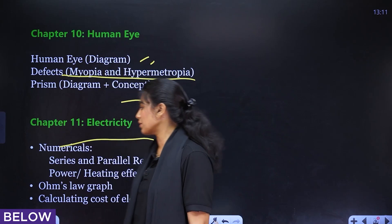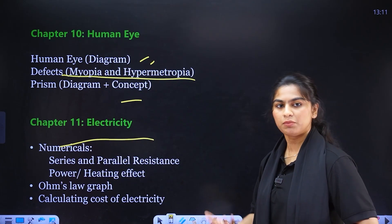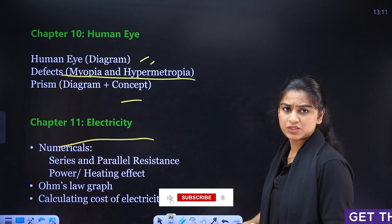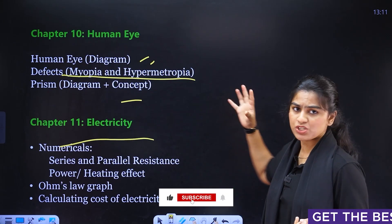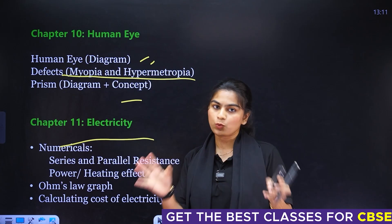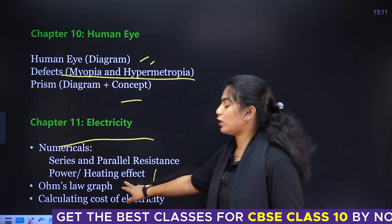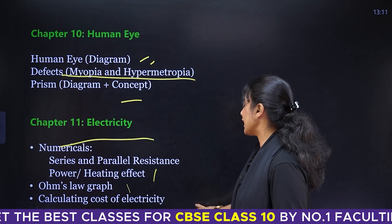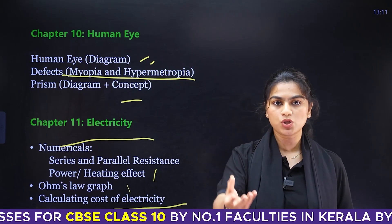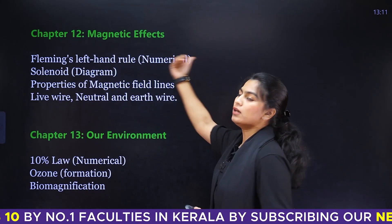Chapter 11 is Electricity, which has many numericals — similar to the Light chapter. The main items are Series and Parallel Resistance and combinations of resistance. Power and Heating Effect equations are also important numericals. Study the graph, and also practice calculating the cost of electricity in a household.